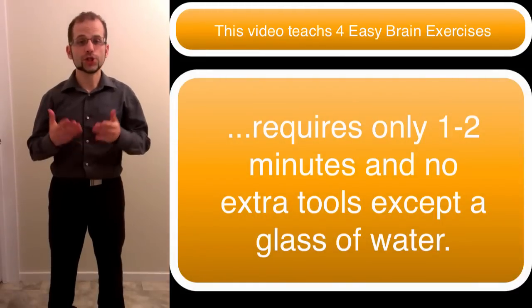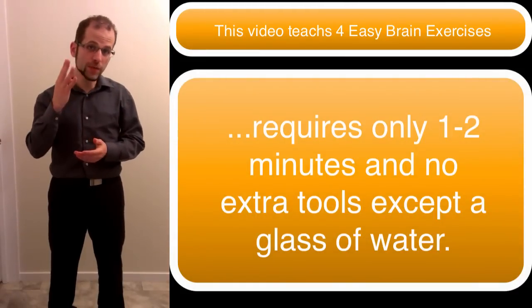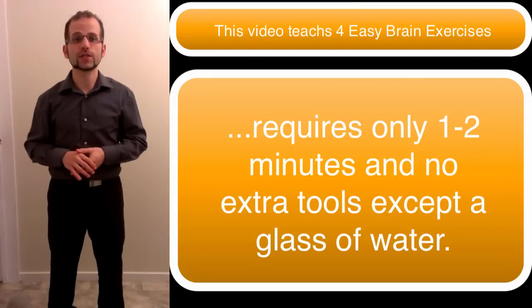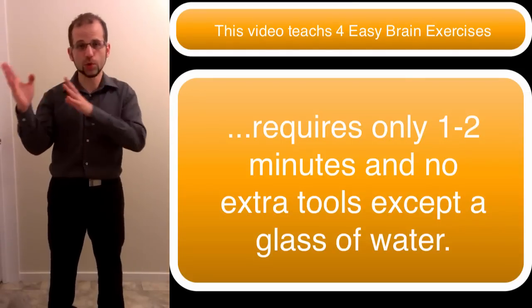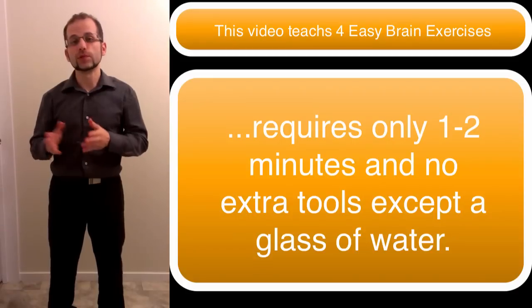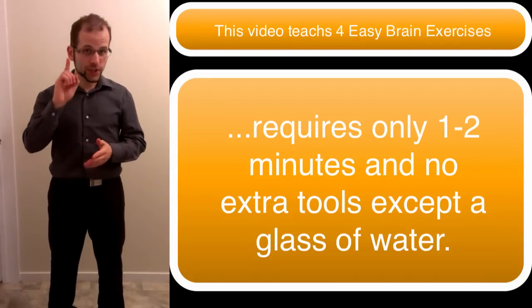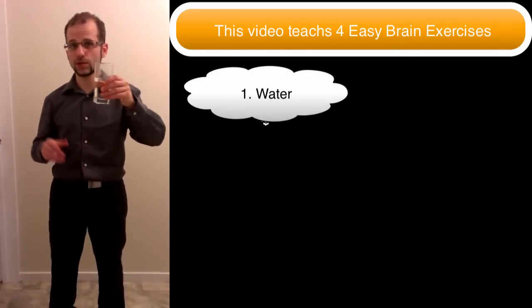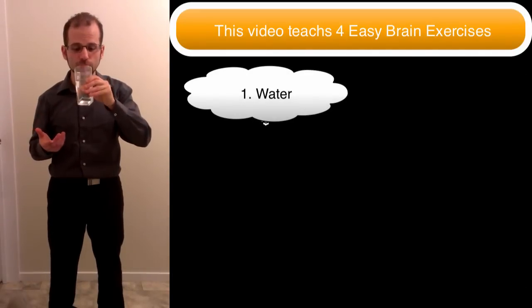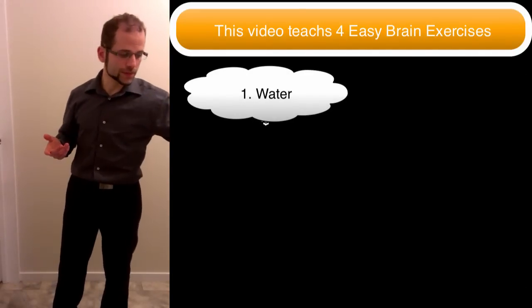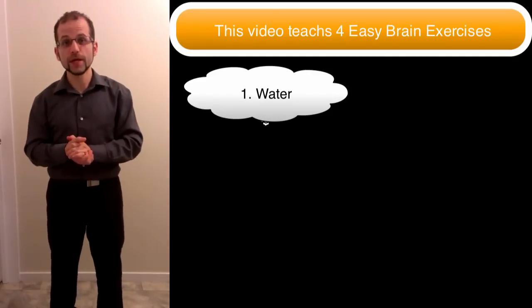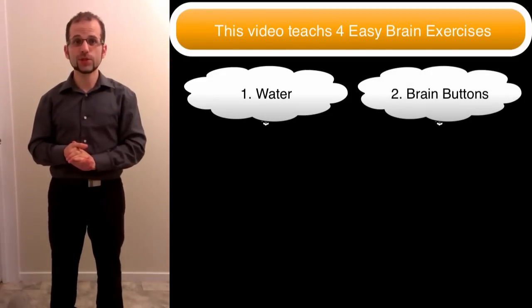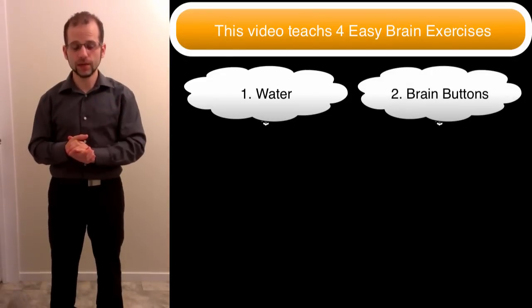And so I want to share with you the four main movements of brain gym that start a process and also help with transitions for your brain between activities. So the very first activity is drinking water. This is very positive in the brain gym world. Drinking water is part of their positive category. And then the second activity is called brain buttons, which is part of their active category.